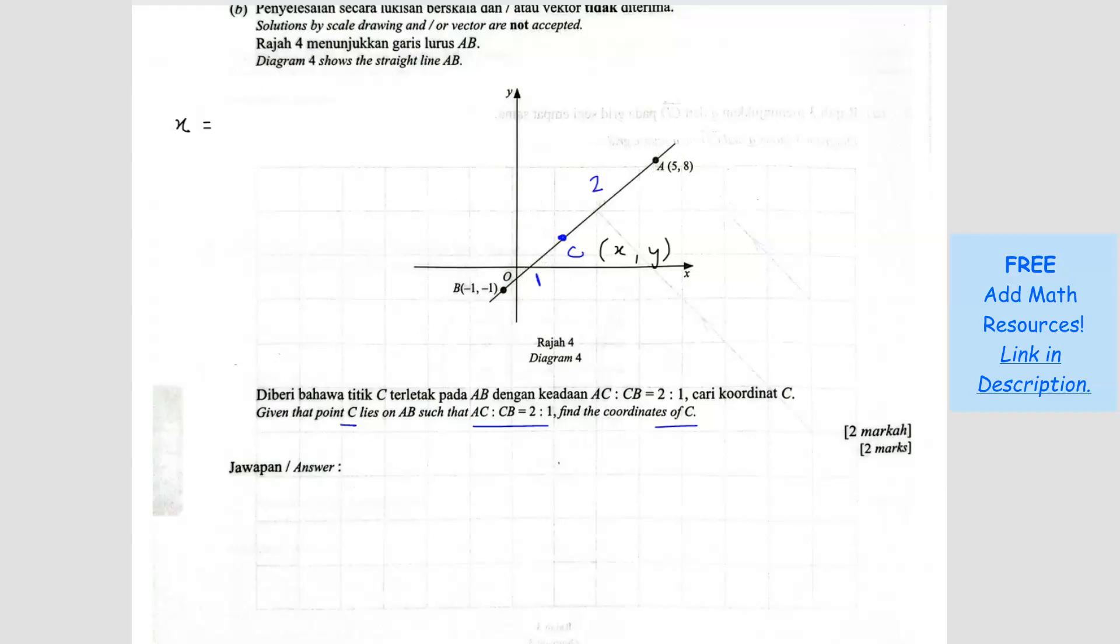So I'm going to do it here. It's basically the formula. So 5 times 1 plus negative 1 times 2 divided by, so 2 plus 1 is 3. So this is the X value. So you just find, so 5 minus 2 divided by 3. Answer is 1. So that's the X value. So coordinate C, X value of coordinate C you've already found.